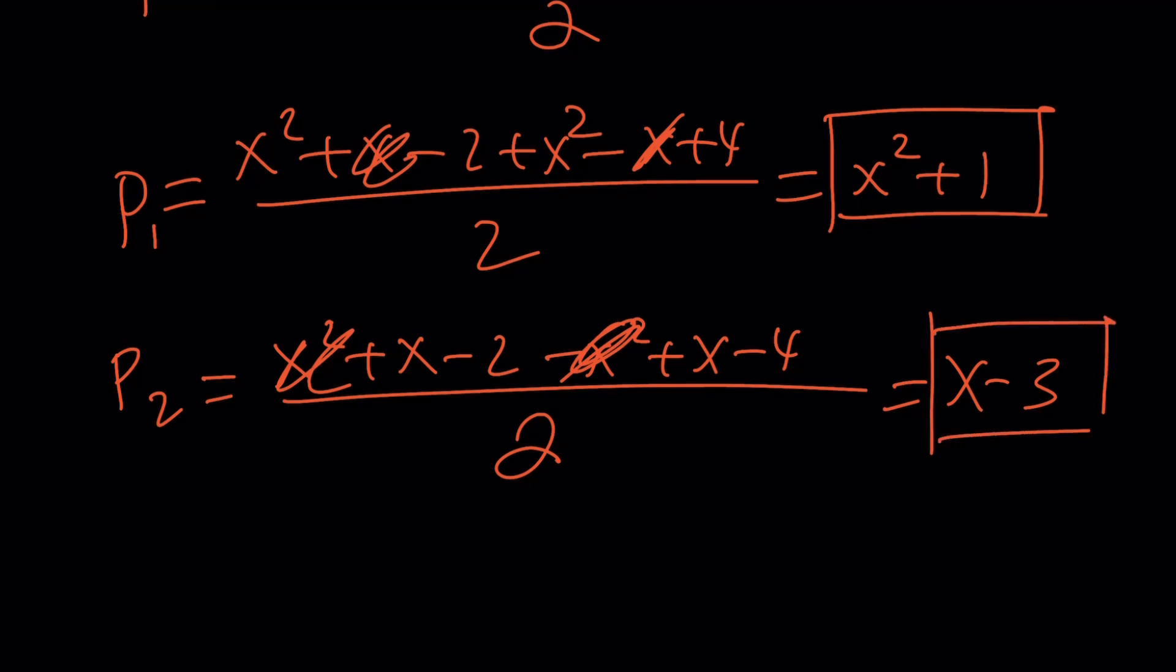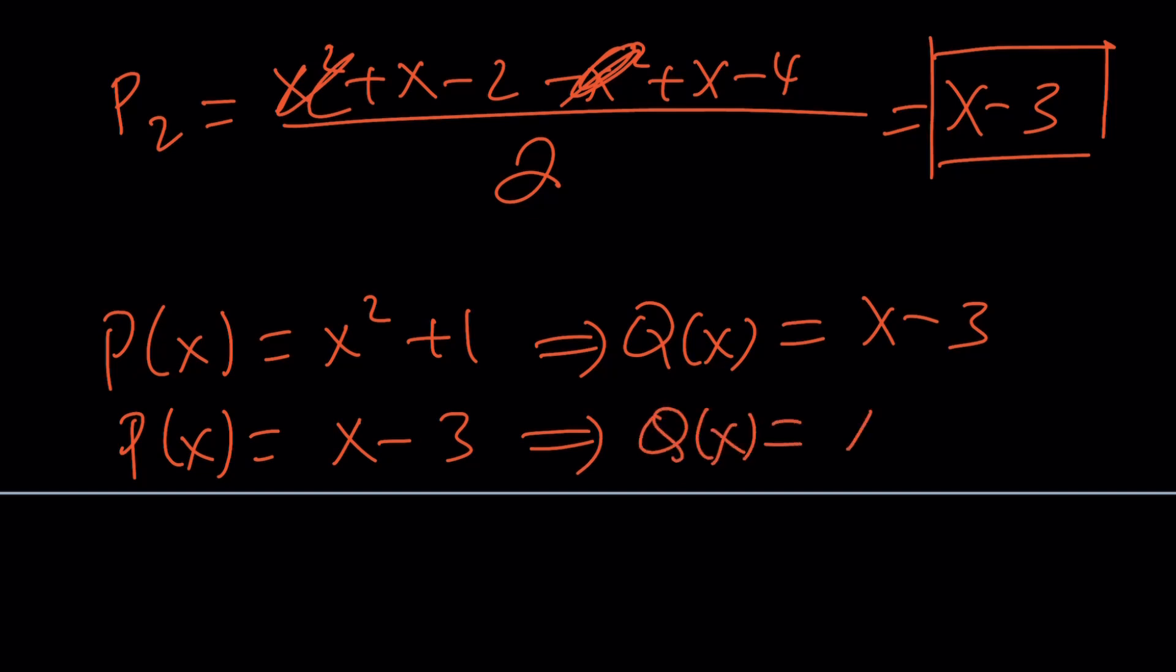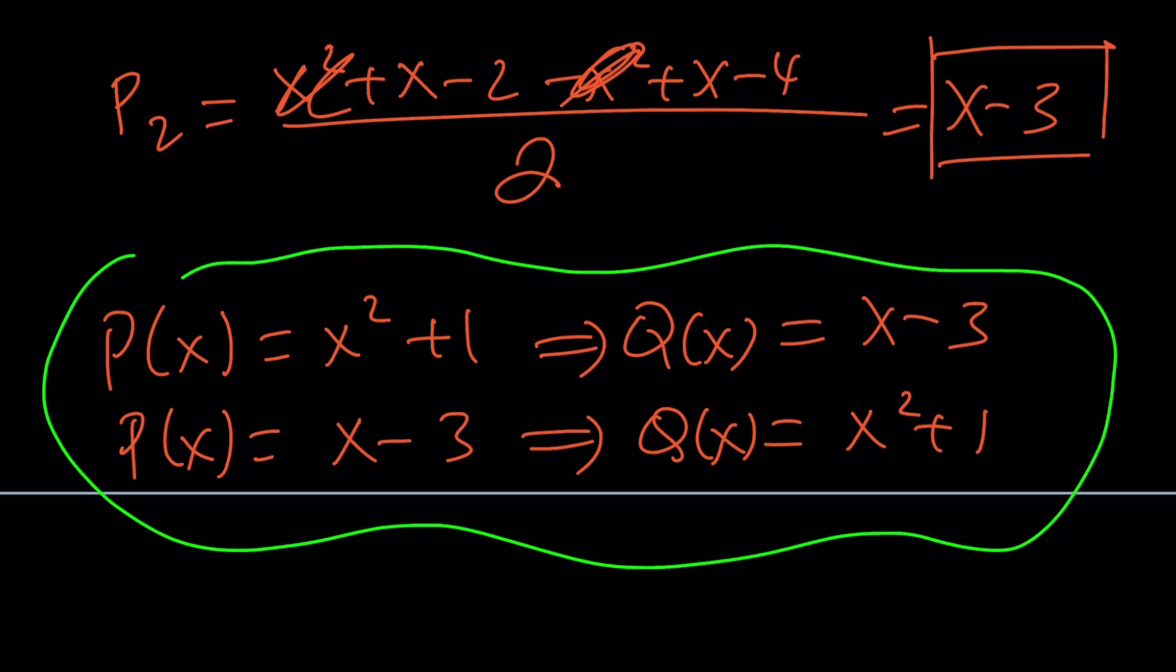Okay great, so we've got two solutions. But those are P values - what about the Q values? Well, P and Q are interchangeable. If P(x) is equal to x² + 1, then Q(x) is just going to be the other one. And vice versa: if P(x) is equal to x - 3, then Q(x) will be the other value, which is x² + 1.